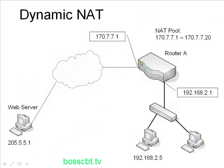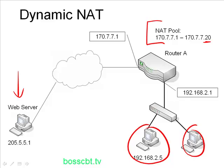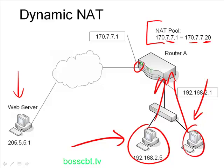Now that we know the basic concepts behind NAT, let's look at a few different types of NAT. The first is dynamic NAT. The reason it's called dynamic is that the router is configured with a pool of IP addresses — a range of public IPs, for example 170.7.7.1 through .20. Whenever a PC on the network needs to access something over the internet, the router draws upon these IPs and dynamically assigns one to each PC. A PC does not always get the same IP, which is why it's called dynamic.